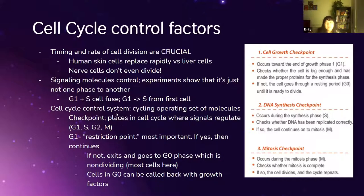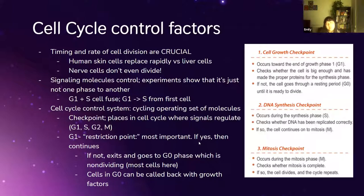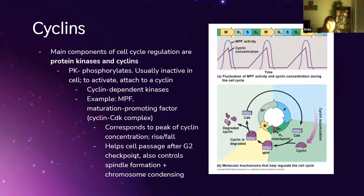Cells in G0 phase can be called back with something called a growth factor. For example, dwarfism is a disease where humans don't grow in height and physical development as much as they should, because they lack something called human growth factor, which allows cells to divide.